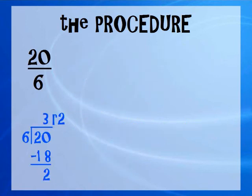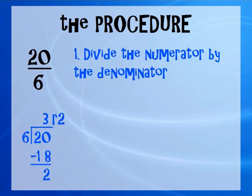So let's go through the steps one by one. First, we're going to divide the numerator by the denominator. As you can see here, we have 20 inside the division box for a long division and 6 is on the outside. So we're doing 20 divided by 6. Read it from inside to out. And we get 3 remainder 2.